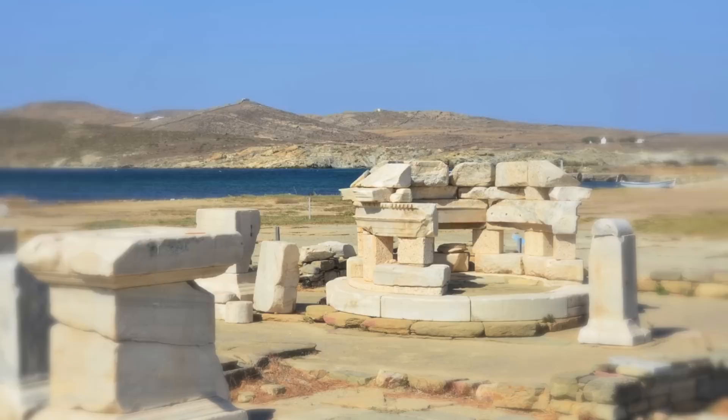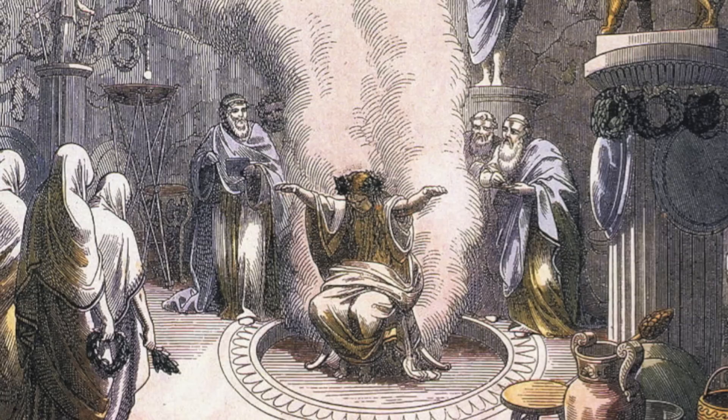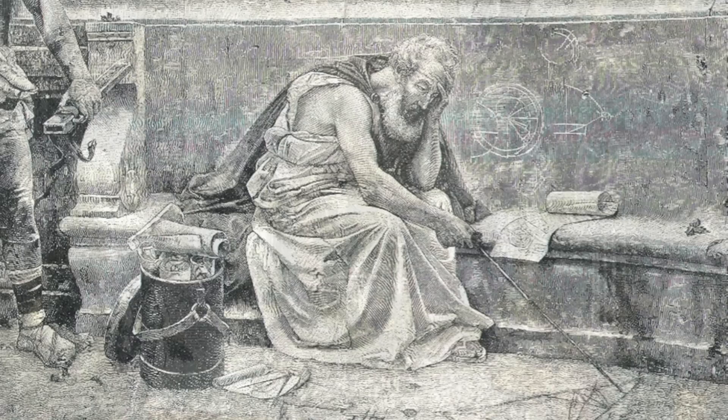In the temple of Delos in ancient Greece, there was a golden altar of a very precise cubical shape. Once there was a pestilence, and the Delons, consulting the oracles, were told that in order to satisfy their god, they had to double exactly the volume of the golden altar, giving it again the shape of a cube.